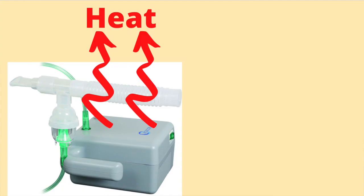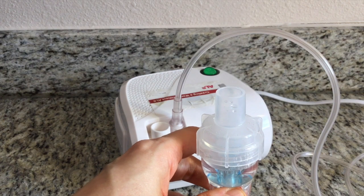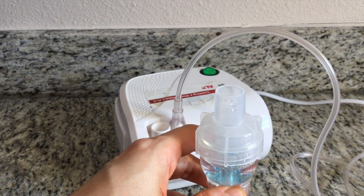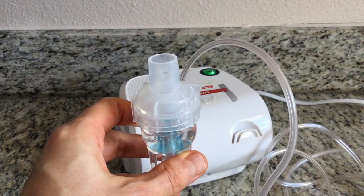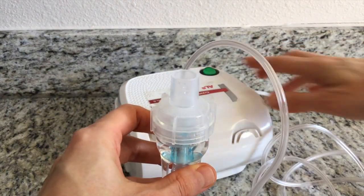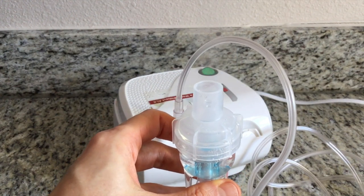The nebulizer produces a lot of heat when turned on. If the nebulizer is used for a prolonged time, the heat may overwhelm it and cause it to shut down. If the nebulizer suddenly stops working while in use, turn off the device and allow it to cool down for 60 minutes. After 60 minutes, try to turn the machine back on. If the device works, the machine shut down because it was overheated.